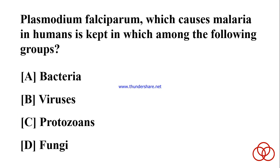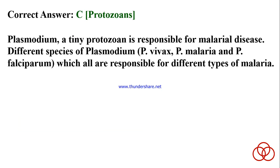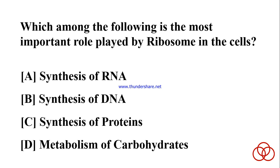Plasmodium falciparum, which causes malaria in humans, is kept in which among the following groups? A) Bacteria. B) Viruses. C) Protozoans. D) Fungi. Correct answer: C. Protozoans. Plasmodium, a tiny protozoan, is responsible for malarial disease. Different species — P. vivax, P. malariae, and P. falciparum — are all responsible for different types of malaria.